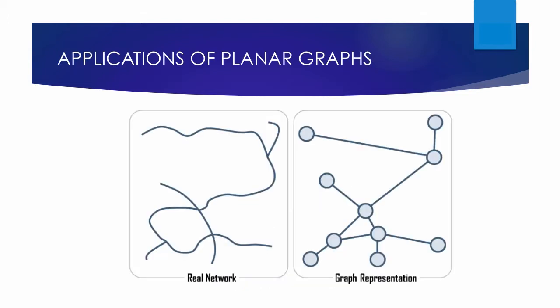Planarity of graphs plays an important role in the design of electronic circuits. We can model a circuit with a graph by representing components of the circuit by vertices and connections between them by edges. We can print a circuit on a single board with no connections crossing if the graph representing the circuit is planar. When the graph is not planar, we must turn to more expensive options — for example, we can partition the vertices into planar subgraphs and construct the circuit using multiple layers.